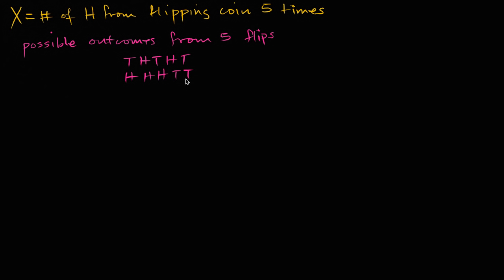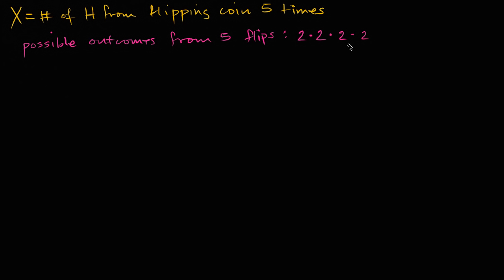How many of these are there? For each flip, you have two possibilities. So the first flip has two possibilities, times two for the second flip, times two for the third flip, times two for the fourth flip, and two possibilities for the fifth flip. That's two to the fifth equally likely possibilities, which is equal to 32.